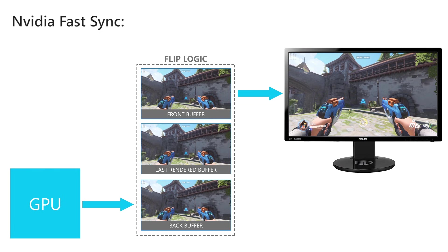With NVIDIA's FastSync, the game engine is not slowed down as the backbuffer is always available for the GPU to render to. And we do not experience any tearing since there is always a complete image stored in the frontbuffer for the scan. FastSync works with any monitor, however it requires a GPU that uses the NVIDIA Maxwell or Pascal architecture. And it decreases the responsiveness of the game, but not as much as VSync does.